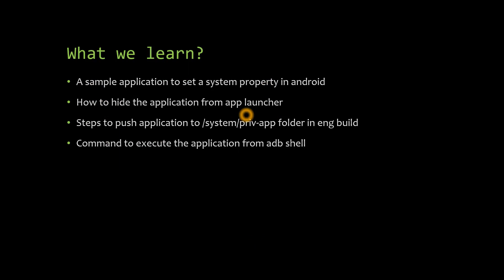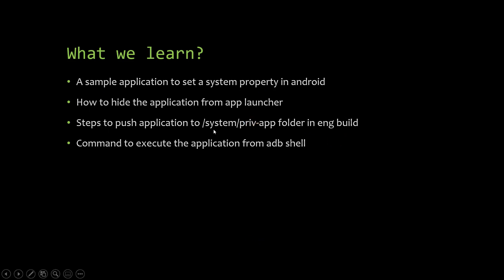To hide the application, we remove the intent filter containing ACTION_MAIN and the LAUNCHER category. Next, we'll see the steps to push the application to the system priv-app folder. Even in an engineering build, the APK I generated cannot be executed directly because it requires system privileges. It's not a system application — we need to push it inside the system priv-app folder so it gets all the required permissions to execute as a system application.